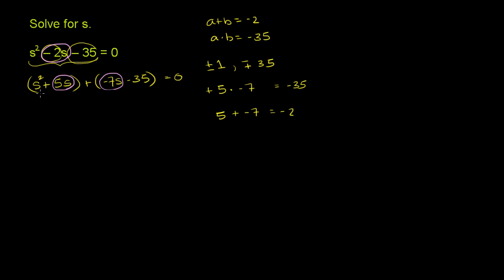Now you can factor an s out of here. You have s times s plus 5. And then to that you're going to add, you can factor out a negative 7 here. Negative 7 times s plus 5. And then we can factor out an s plus 5. So you get s plus 5, I'm factoring out an s plus 5, times what we have left is an s plus negative 7. Or that's the same thing as s minus 7. And of course, all of that is equal to 0.